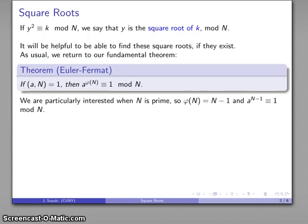We're particularly interested in the case where n is a prime number. In that case, phi of n is just going to be n minus 1, and so I have a to the power of n minus 1 congruent to 1 mod n.